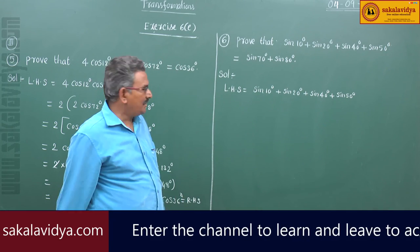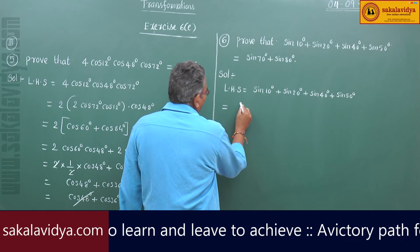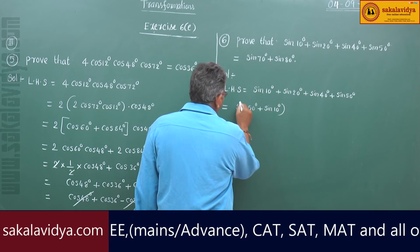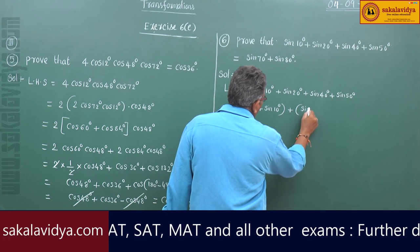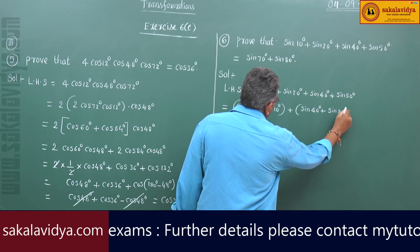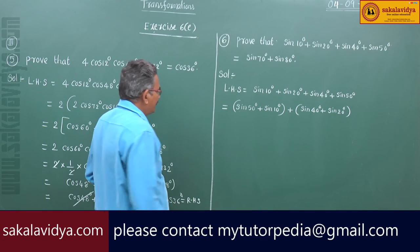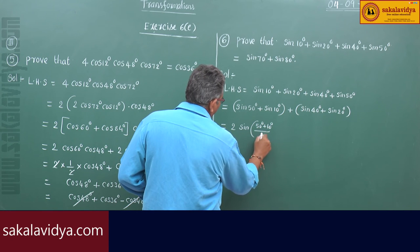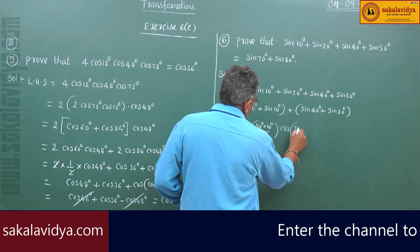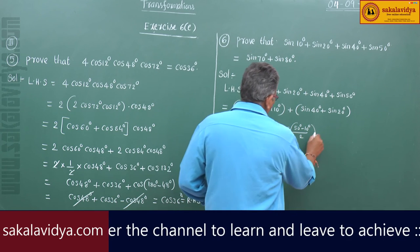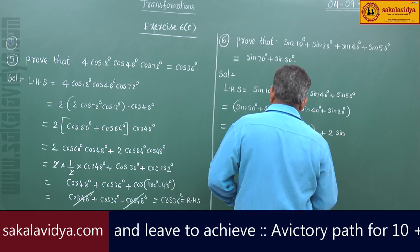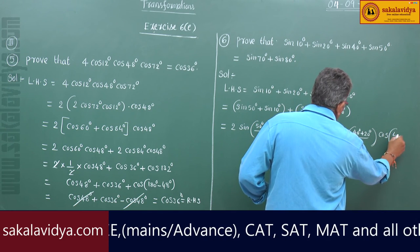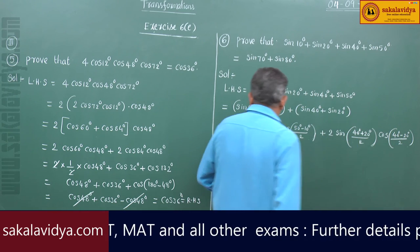Let us rearrange the terms. So we write sin50 plus sin10 degrees, and sin40 plus sin20 degrees. Applying sinC plus sinD formula: this is 2·sin((50+10)/2)·cos((50-10)/2) plus 2·sin((40+20)/2)·cos((40-20)/2).